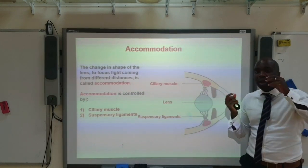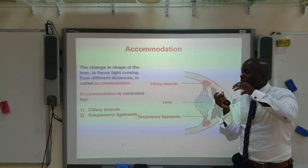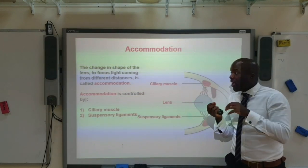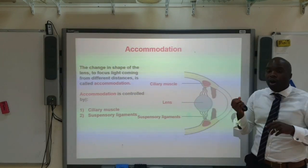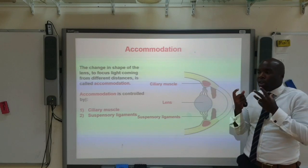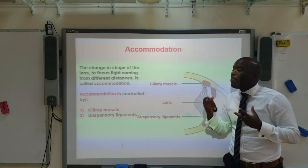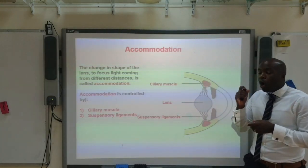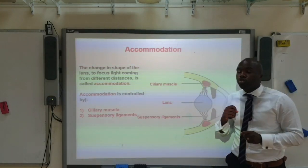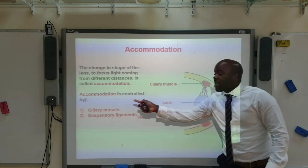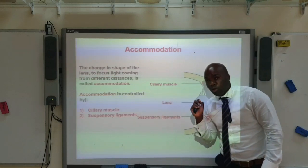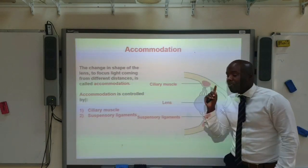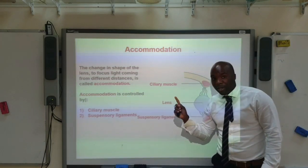The change in shape of the lens from thin to thick is called accommodation. Accommodation is controlled by the ciliary muscle and the suspensory ligaments.